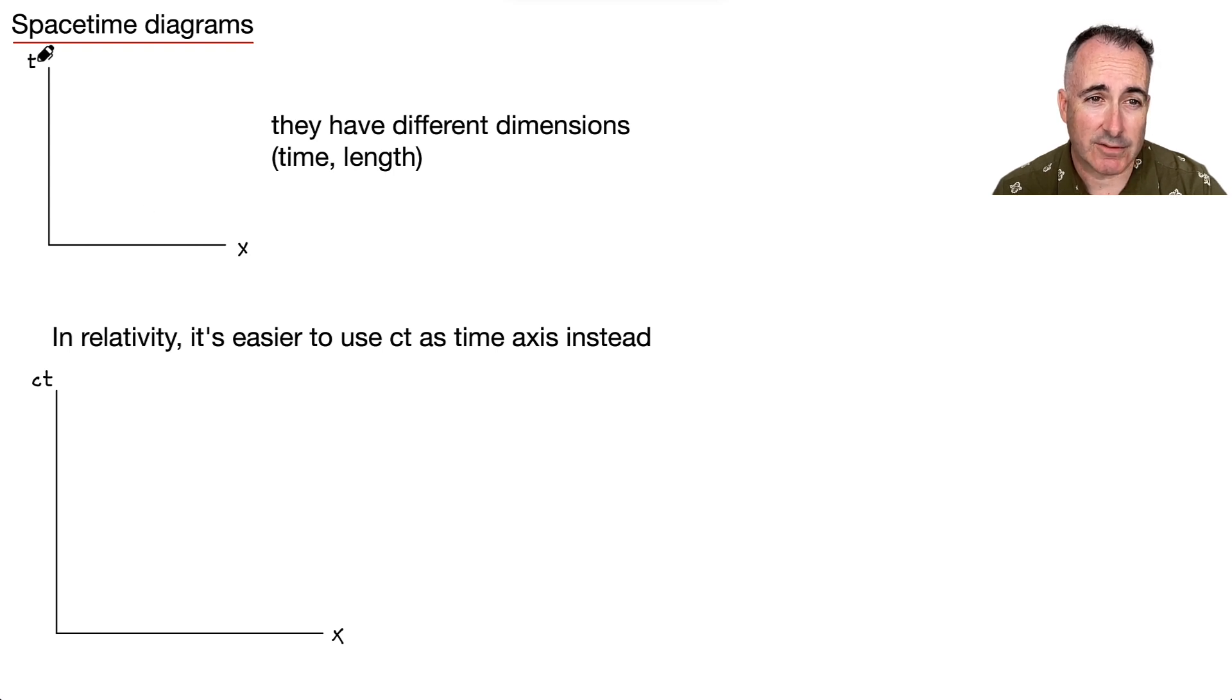But the thing is, they have different dimensions, right? So this one has dimensions of time, this one has dimensions of length, which is fine normally. But it turns out in relativity, it becomes way easier later on to actually use something different. So instead, in relativity, what we like to do, we like to use CT for the scale, or for the units on the Y-axis, and we still just use X for the X-axis. You might think that's a little bit weird, but it turns out it's going to have some nice features. First of all, it's going to end up to where they're going to have the same units. If you think about speed is in meters per second, let's say, and this is in seconds, so that means you end up with something in meters, and this is something in meters. So it turns out they both have the same dimensions in that sense.